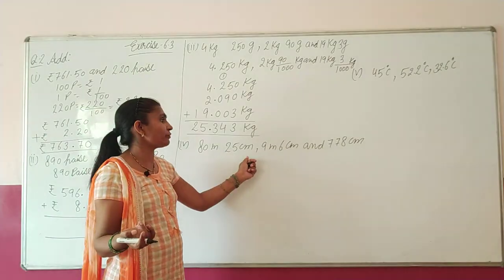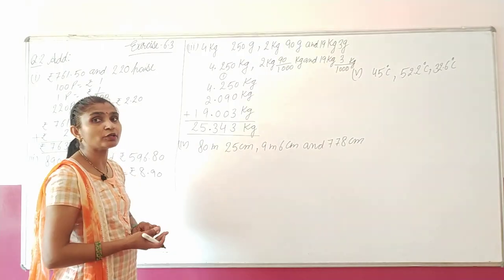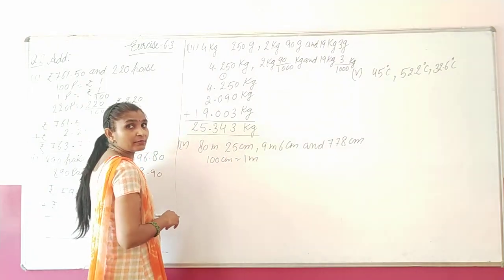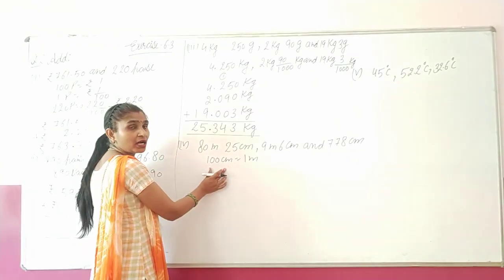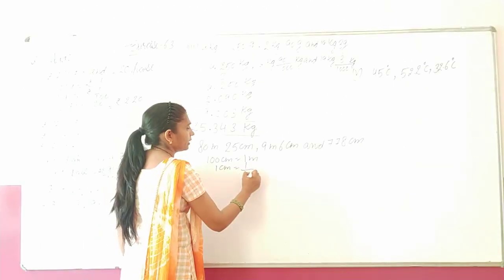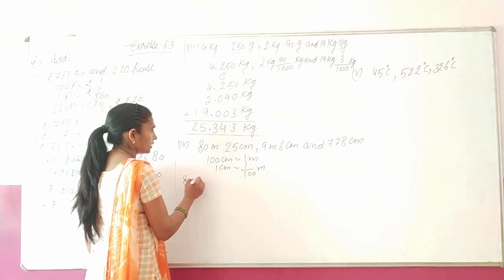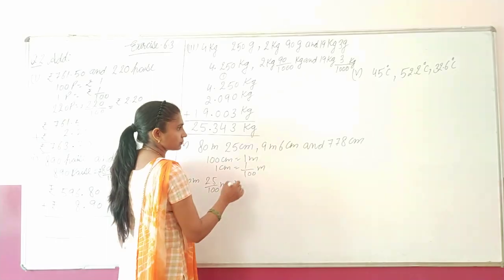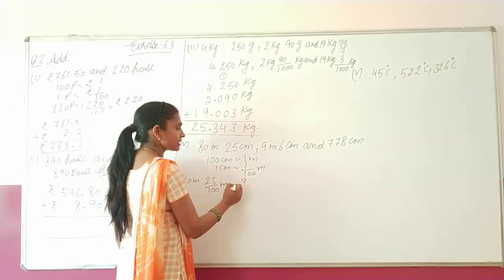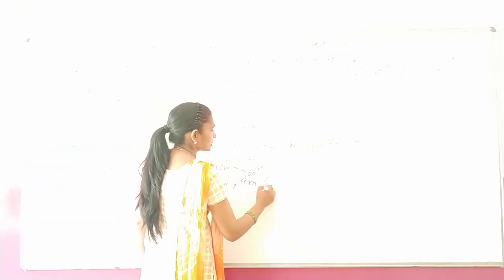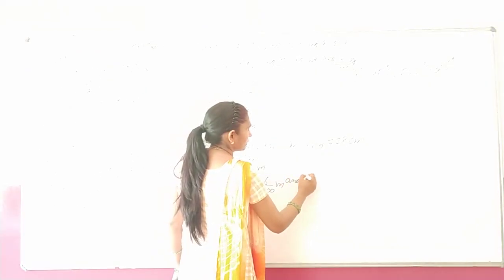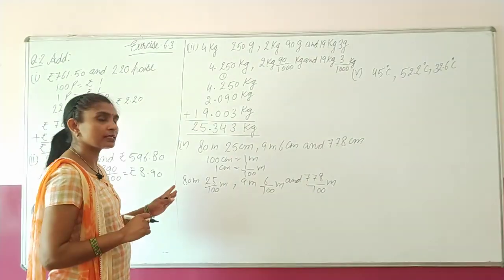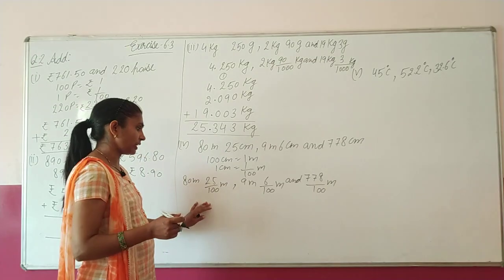Next part: 80 m 25 cm, 9 m 6 cm, and 7 m 78 cm. In 1 meter there are 100 centimeters, so 1 cm = 1/100 m. Converting: 80 m 25 cm = 80.25 m; 9 m 6 cm — 6 is in the hundreds place so tens place is 0, giving 9.06 m; 778 cm divided by 100 — decimal comes between the two 7s — giving 7.78 m. Now we have to do addition.